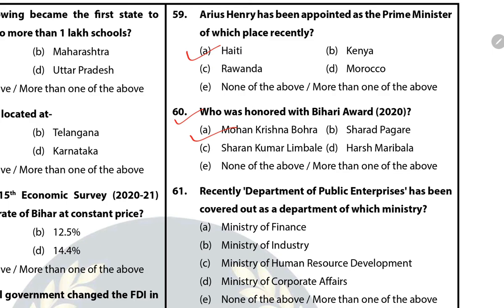Question 61: Recently the Department of Public Enterprises has been carved out as a department of which Ministry? The answer is A — Ministry of Finance. Till now, a total of five departments were functioning under the Ministry of Finance. Recently, a new department called Public Enterprise Department was created.